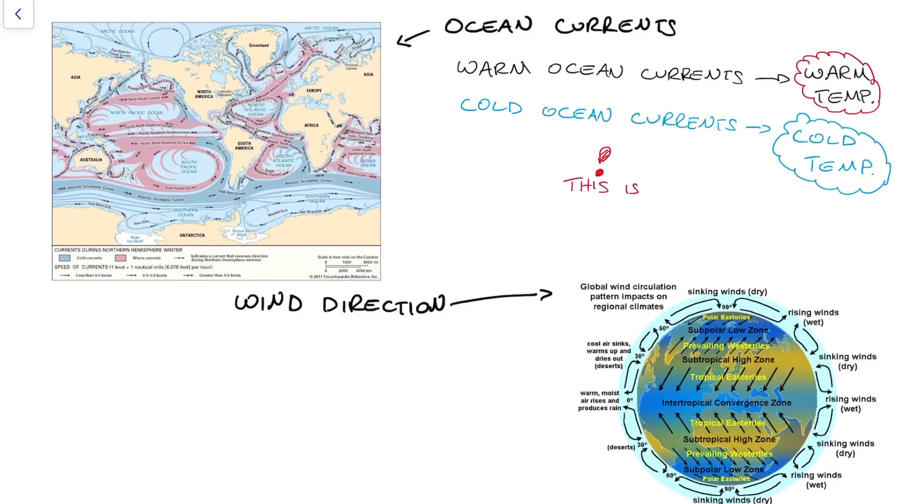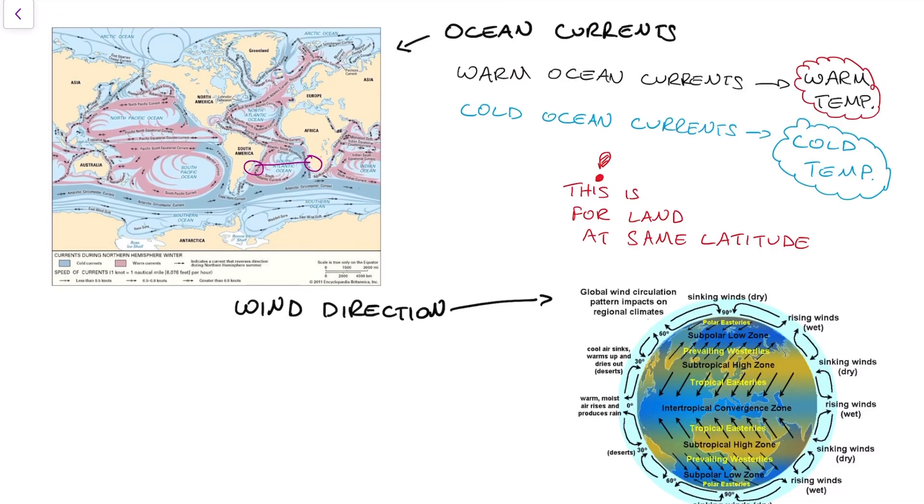So you can see on this map, for example, the most famous one being the Humboldt Current that comes up the coast, the west coast of South America. That is a cold ocean current and it brings clear skies and dry climate to the west part of South America.